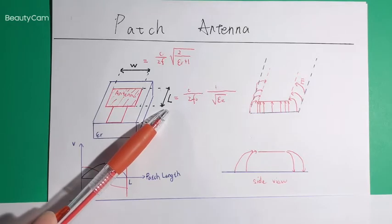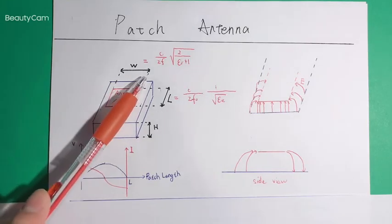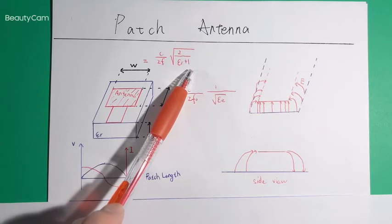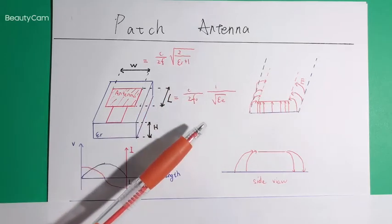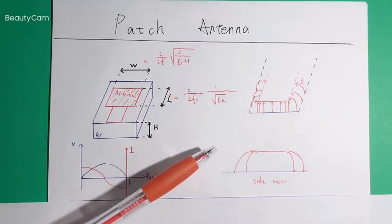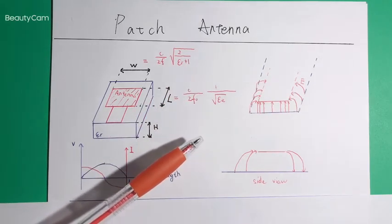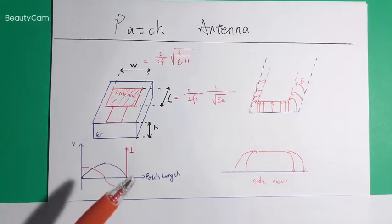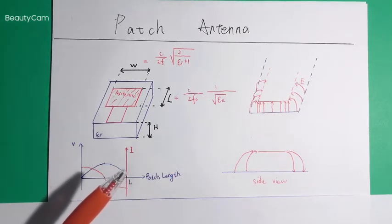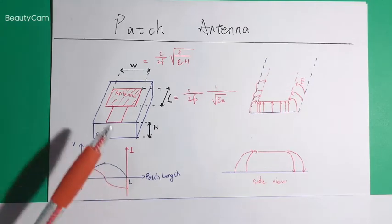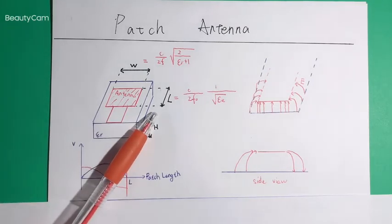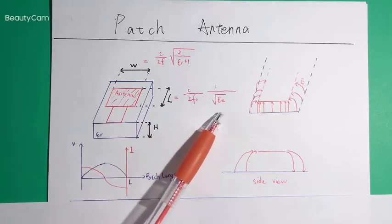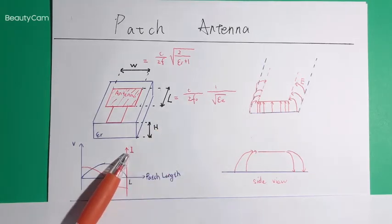The width should be smaller than this value, in case there are some other radiation modes which will destroy the radiation pattern. Next we will talk about the radiation mechanism of the patch antenna. As we said, the length of the patch antenna is normally a half-guided wavelength, so the current and the voltage on the patch antenna are as shown here.